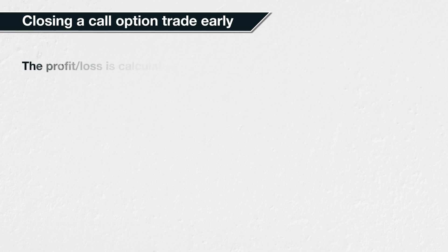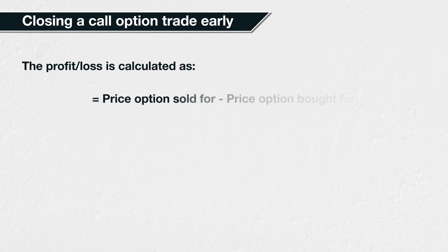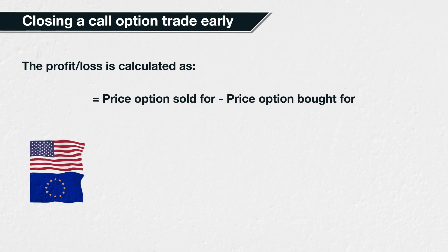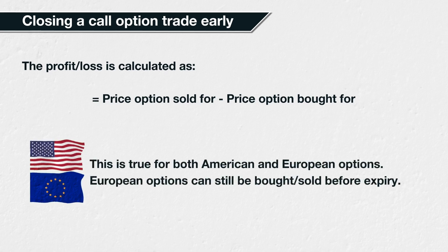When an option position is not held to expiry but closed early, the profit and loss calculation is very simple. Every trade involves a buy order and a sell order, so you simply subtract what you bought the option for from what you sold it for. This is true for both American and European options because we're talking about closing a position by selling it to someone else, not about exercising the option.